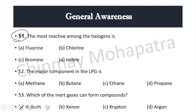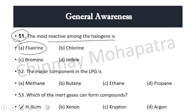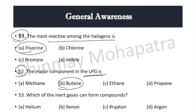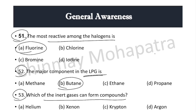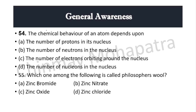Question 51: The most reactive among the halogens — right answer is fluorine. Question 52: Major component of liquefied petroleum gas — right answer is butane. LPG's major component is butane. Question 53: Which of the inert gases can form compounds? Xenon is the inert gas that can form compounds.